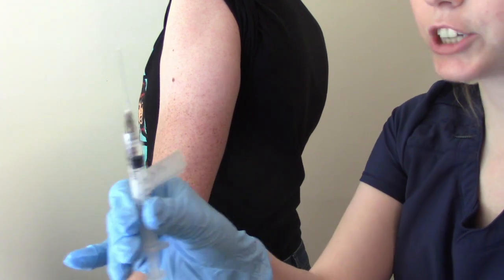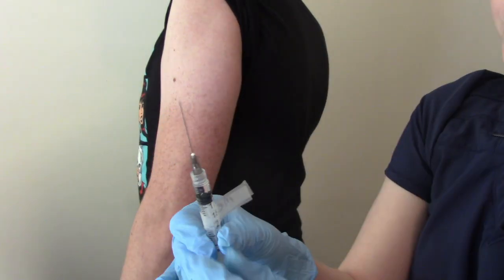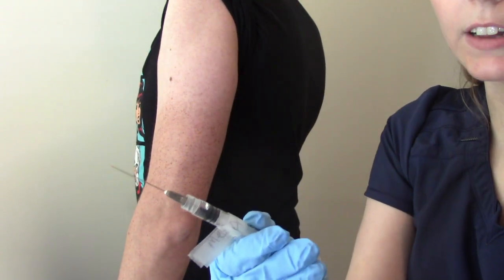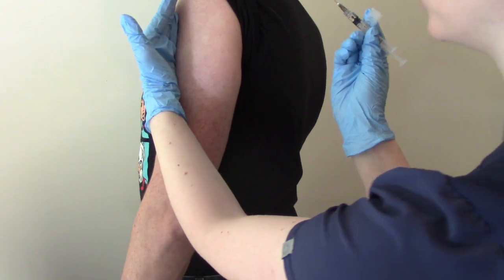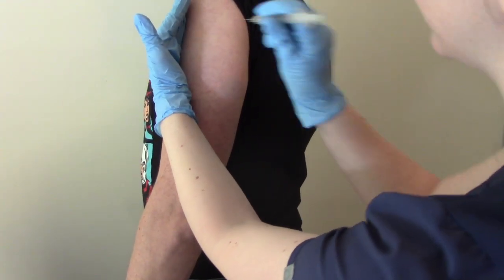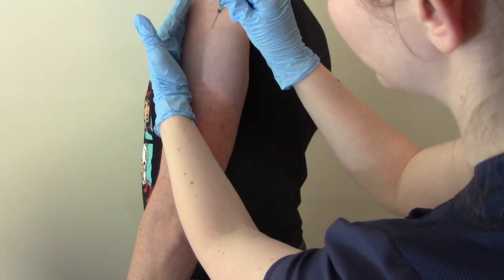So this is our IM injection that's been labeled medication A. We're going to give it bevel up. Use your hand to move it off to the side, and then at a 90 degree angle, you can inject.